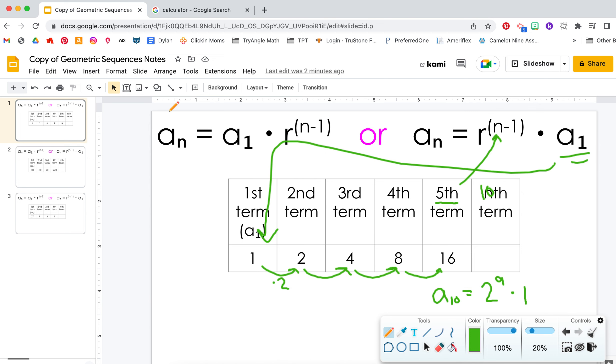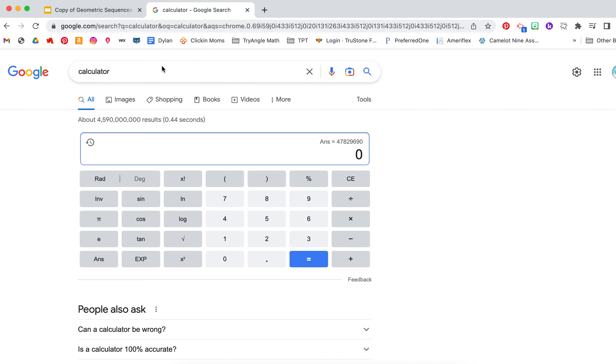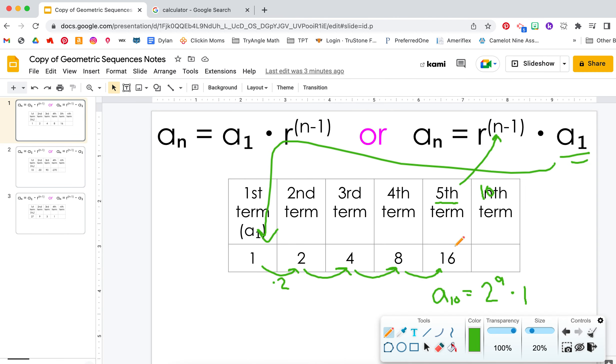So let's use a calculator. 2, this one is your exponent button, to the power of 9. Oops, that didn't work out. Okay, 2 to the power of, and you'll get this little box right here, 9 equals, and then anything times 1 is still itself, so that one would be 512.